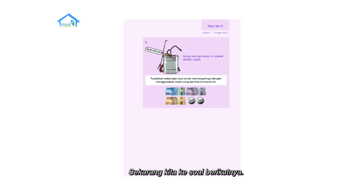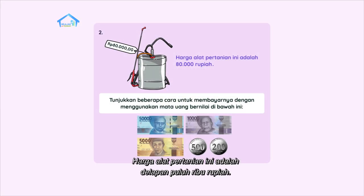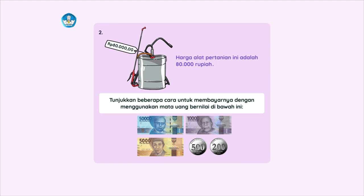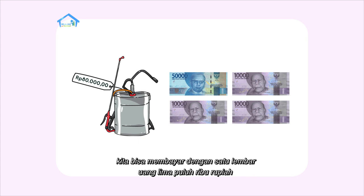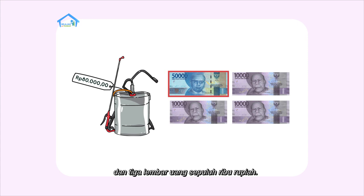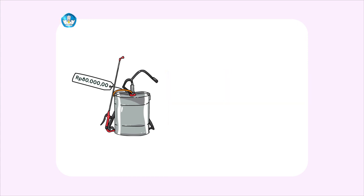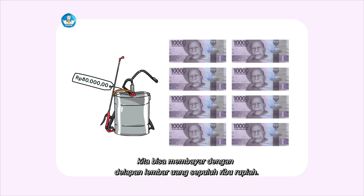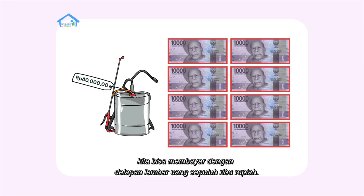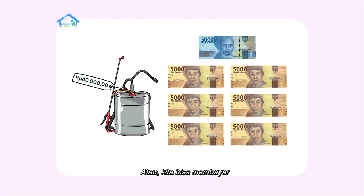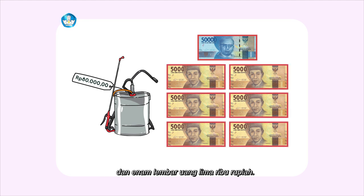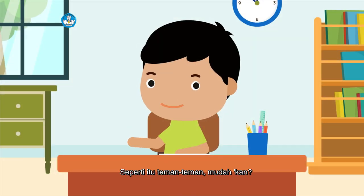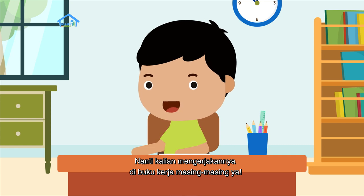Sekarang kita ke soal berikutnya. Harga alat pertanian ini adalah 80.000 rupiah. Tunjukkan beberapa cara untuk membayarnya dengan menggunakan mata uang bernilai di bawah ini. Yang pertama, kita bisa membayar dengan 1 lembar uang 50.000 rupiah dan 3 lembar uang 10.000 rupiah. Yang kedua, kita bisa membayar dengan 8 lembar uang 10.000 rupiah. Atau kita bisa membayar dengan 1 lembar uang 50.000 rupiah dan 6 lembar uang 5.000 rupiah. Seperti itu, teman-teman. Mudah kan? Nanti kalian mengerjakannya di buku kerja masing-masing ya.